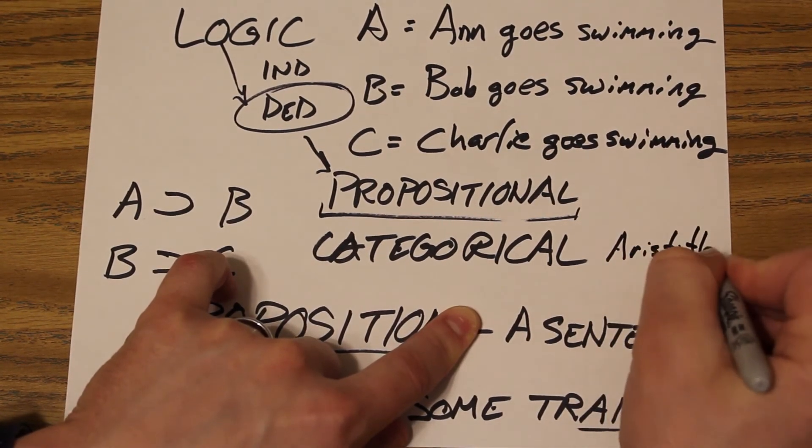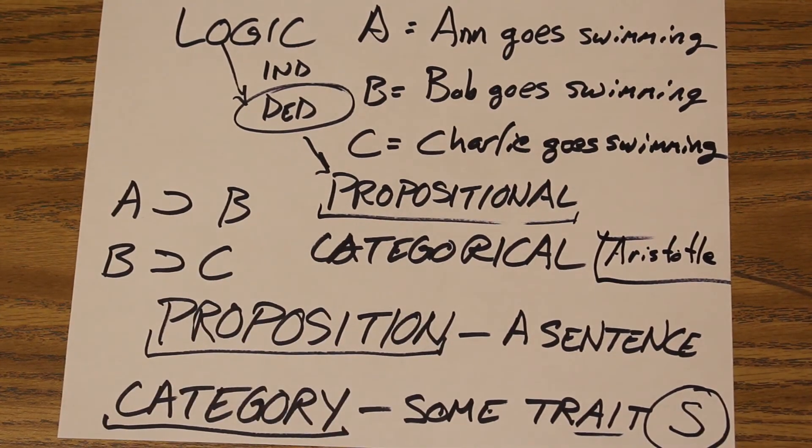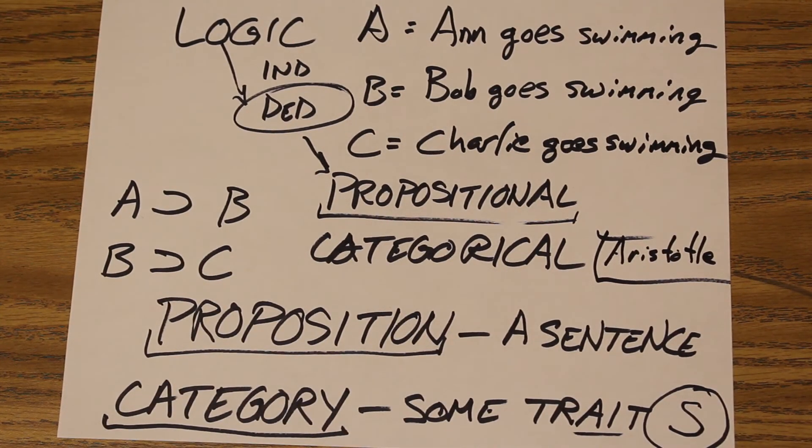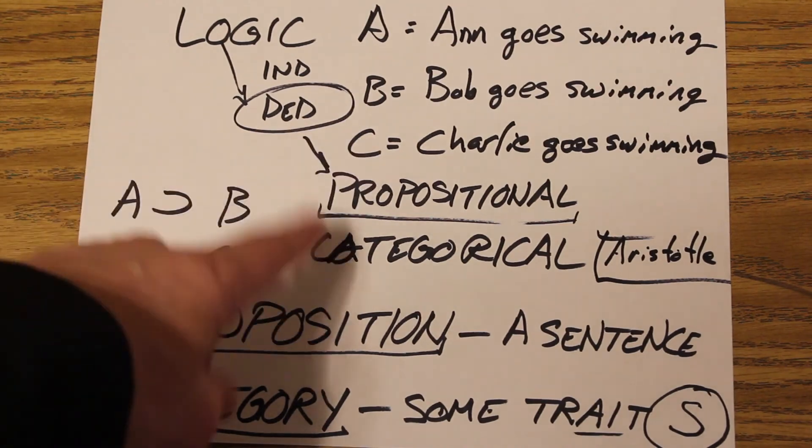Categorical logic is also known as Aristotelian logic. But we'll talk about that a bit later. That's our difference between propositional versus categorical logic. And remember, these are subsections of deduction.